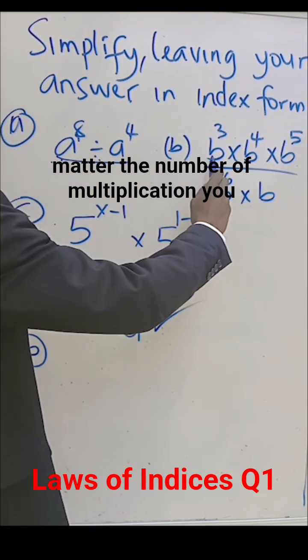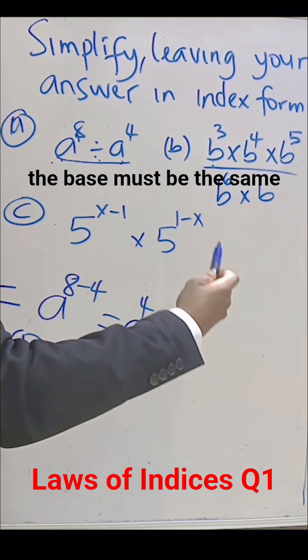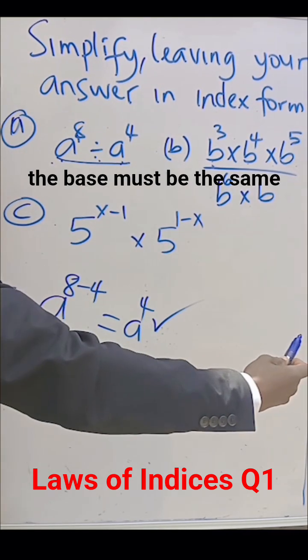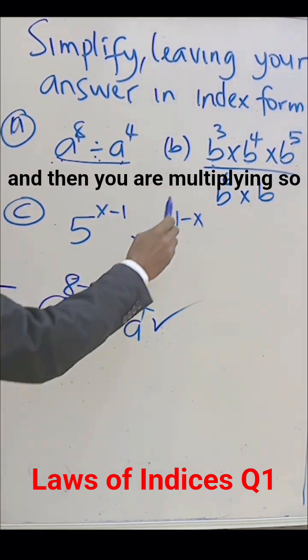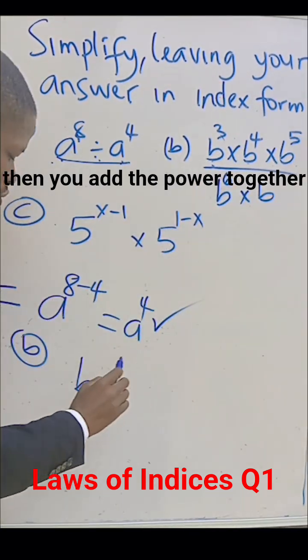It doesn't matter the number of multiplications you have. What is important is that the base must be the same. And then, you are multiplying. So you take one of the bases, then you add the power together: